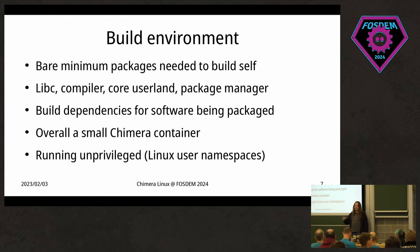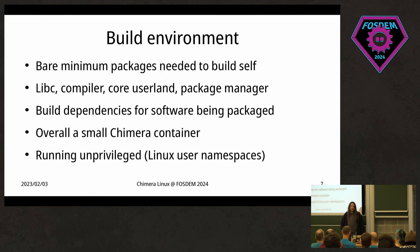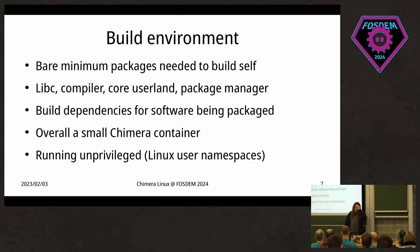The containerization is done using the bubblewrap tool, which is also used by Flatpak, and provides a minimal interface to the Linux namespace kernel feature. This lets us make small sandbox containers without requiring much other infrastructure. The outside host system needs to provide only Python for running CBuild itself, bubblewrap, and a potentially static build of APK. Everything else is set up by us. It runs completely unprivileged — nothing requires root and you cannot run it as root.